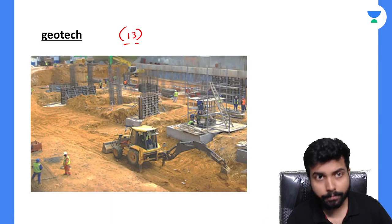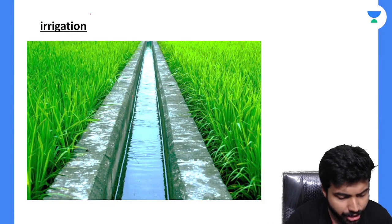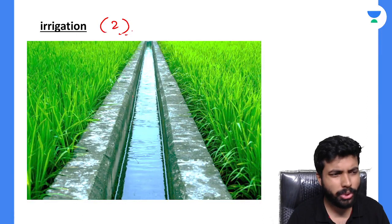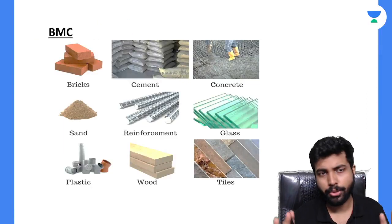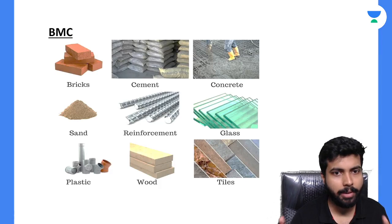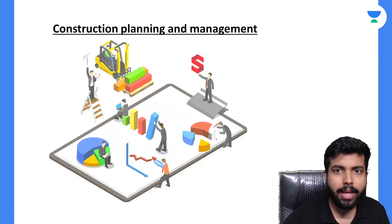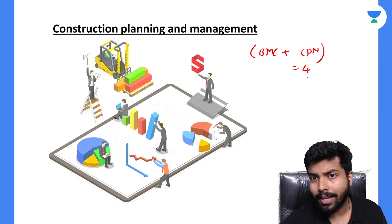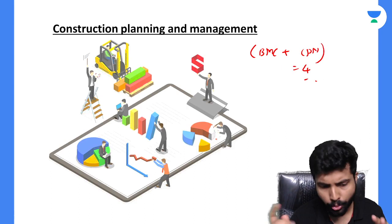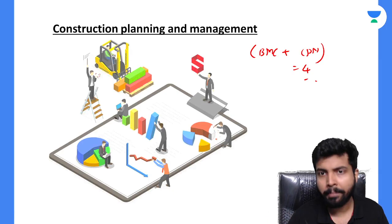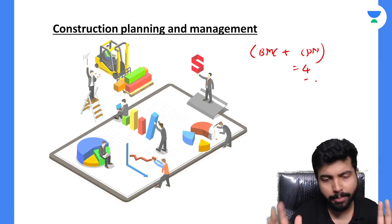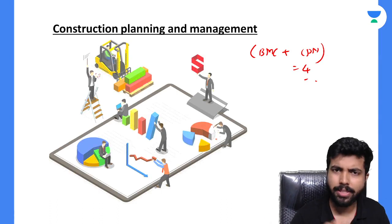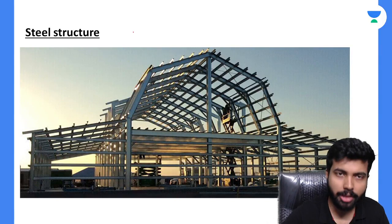For Irrigation Engineering, the expected weightage is around 2 marks, maximum 2 to 3 marks. For BMC and Construction Planning and Management combined, the expected weightage is around 4 marks. It may be 2 plus 2, one for BMC and two for CPM, or 1 plus 3, anything can happen, but mostly it's around 4 to 5 marks combined.